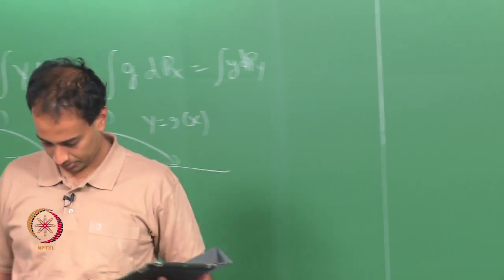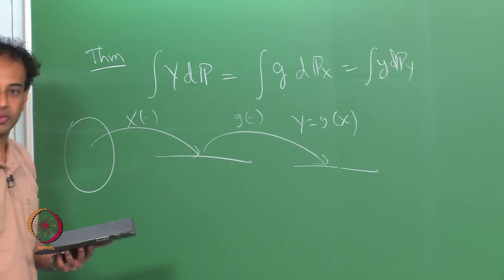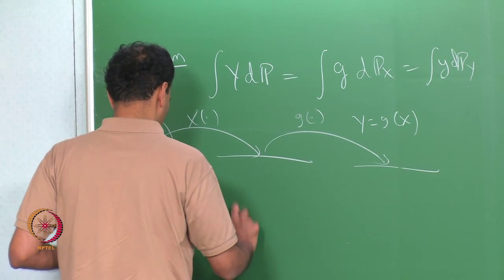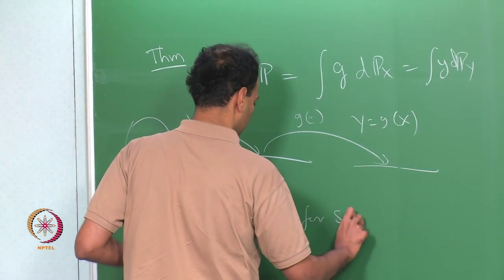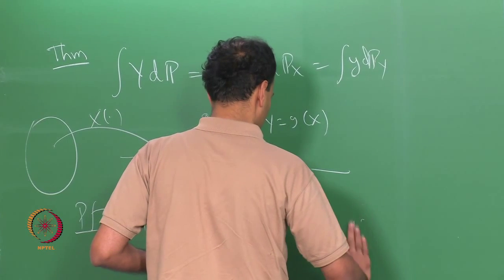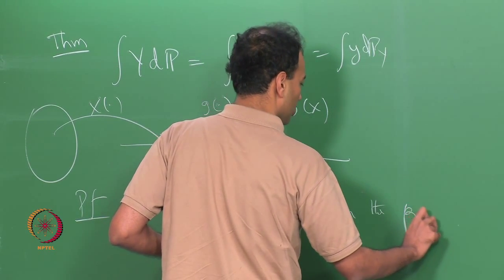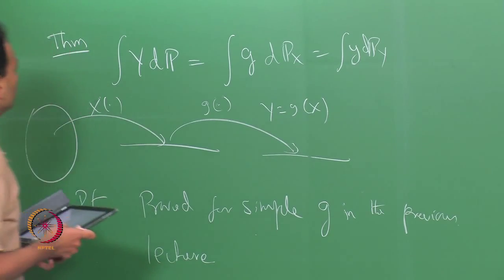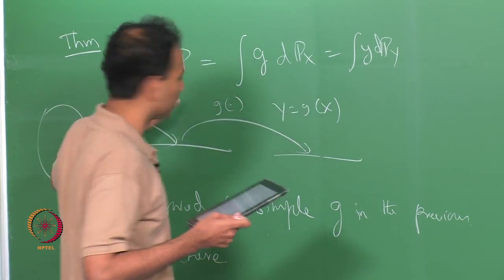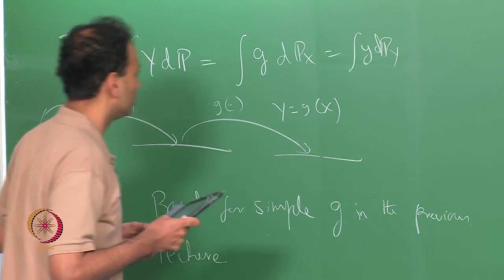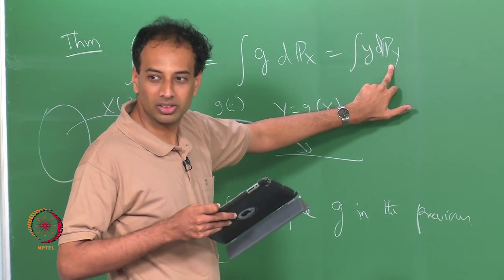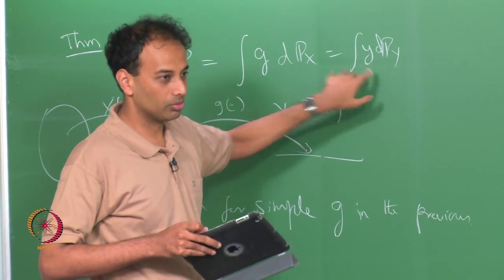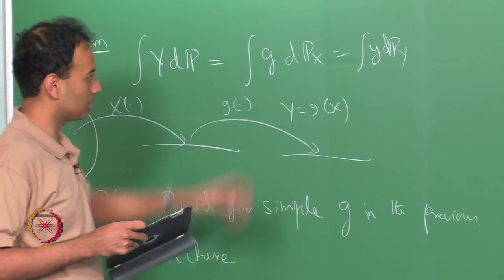That is what we were trying to prove. We proved it for simple functions last lecture. If g is a simple function, we proved that integral g d p_x is equal to integral y d p. That was proved and it was trivially equal to integral y d p_y because it was only taking those finite values y_1 through y_n, and you could just write this as sum over y_1 times probability y equals y_1. So, when g was simple it is very easy.